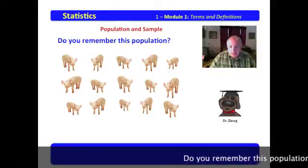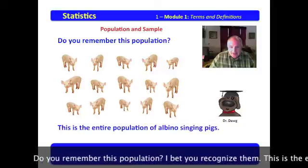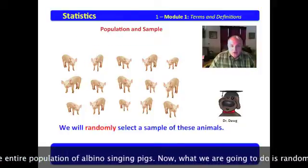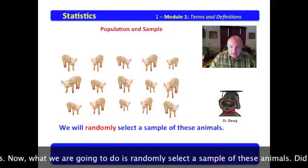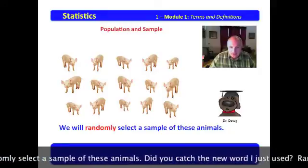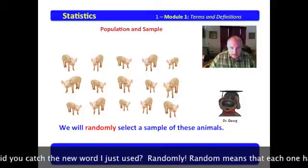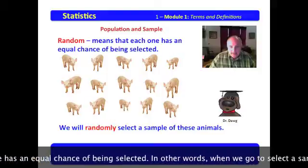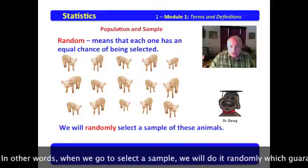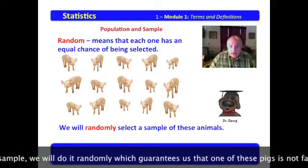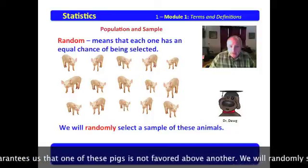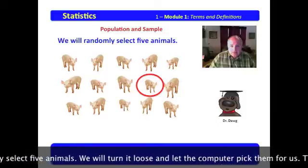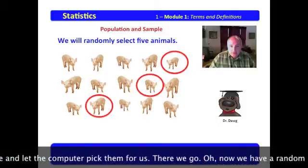Do you remember this population? I bet you recognize them. This is the entire population of albino singing pigs. Now what we're going to do is randomly select a sample of these animals. Do you catch the new word I just used? Randomly. Random means that each one has an equal chance of being selected. In other words, when we go to select a sample, we will do it randomly, which guarantees us that one of these pigs is not favored above another. We will randomly select five animals. We will turn it loose and let the computer pick them for us. There we go.